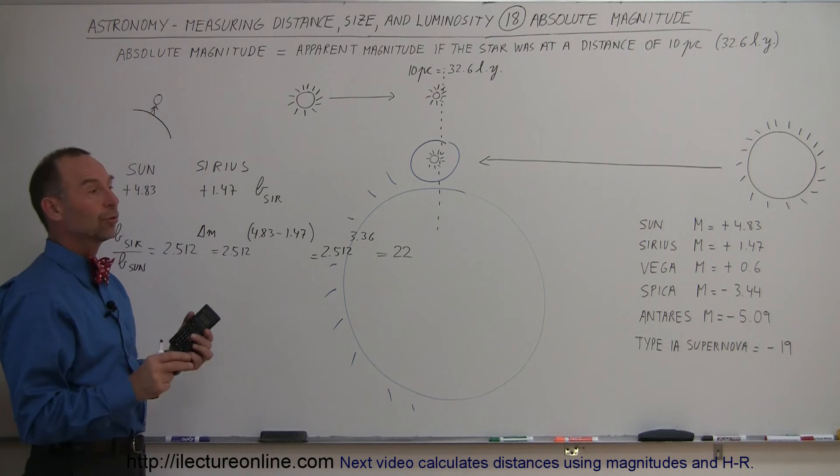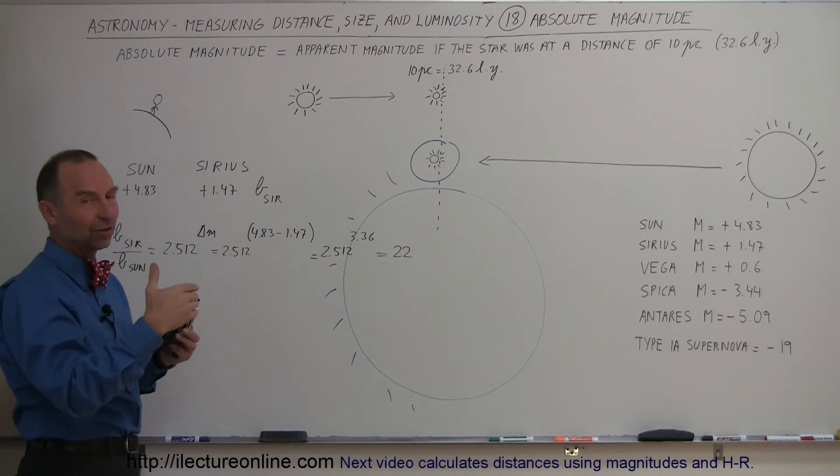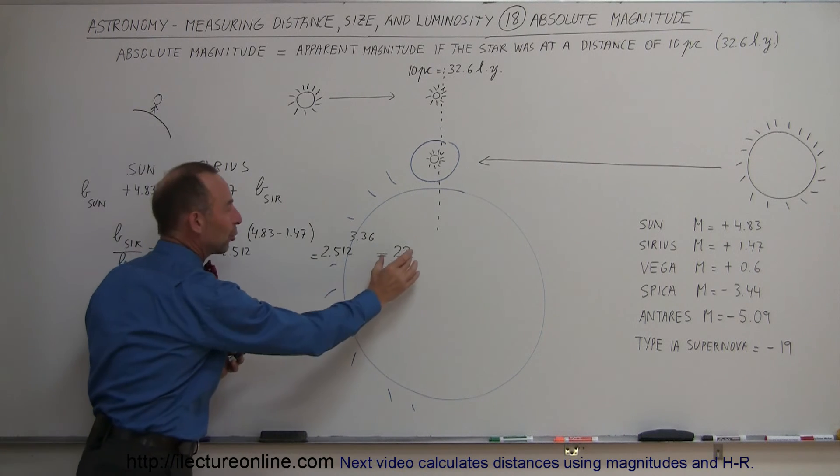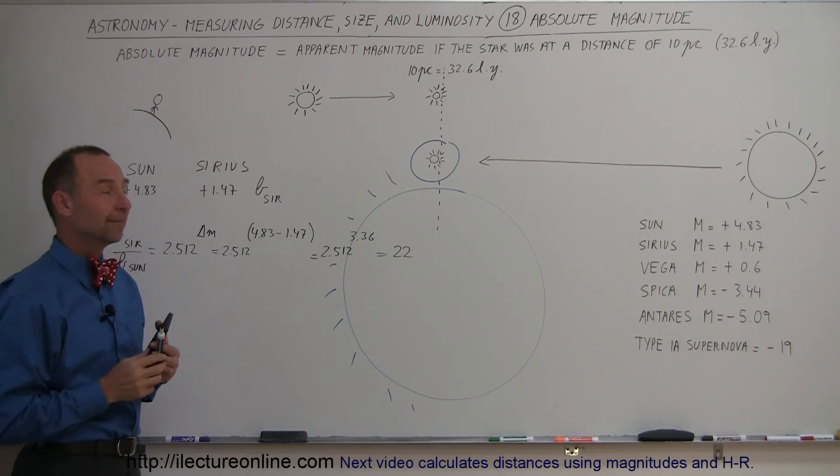Or, if you were to put the sun next to Sirius, and if you want to get the same amount of light from stars like the sun, you would need to place 22 stars like the sun next to Sirius to put out the same amount of light.